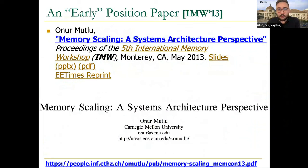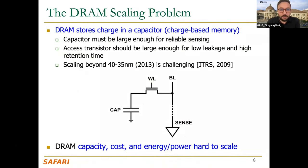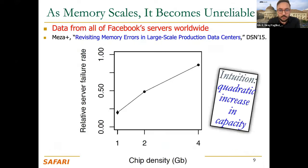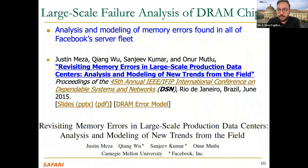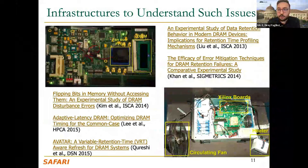I'd like to refer to an early positioning paper about memory scaling. This paper discusses the scaling problems of DRAM. In essence, a DRAM cell stores a bit of data as a charge on a capacitor, accessed through an access transistor. Both the capacitor and transistor must be large enough for reliable operation, and this becomes really challenging as we scale down the technology node. A characterization work from 2015 shows that across all Facebook servers worldwide, as chip density increases, server failure rates also increase.